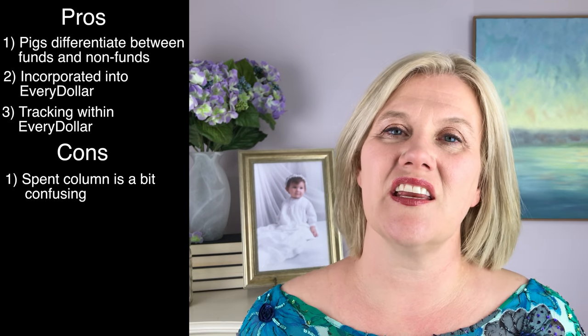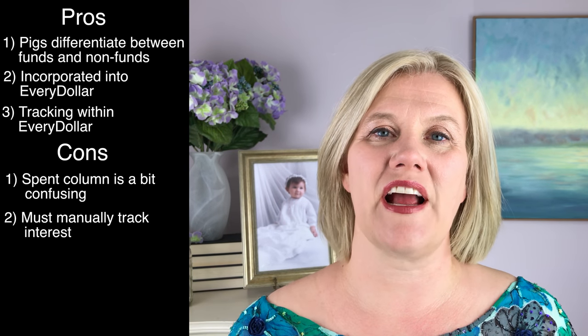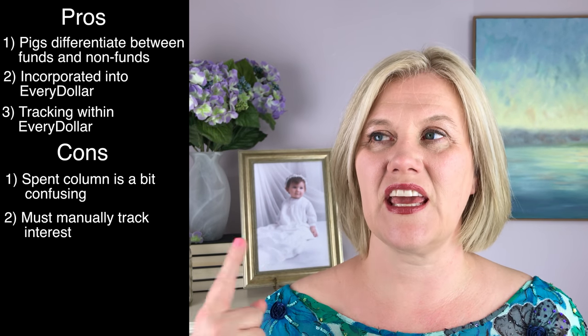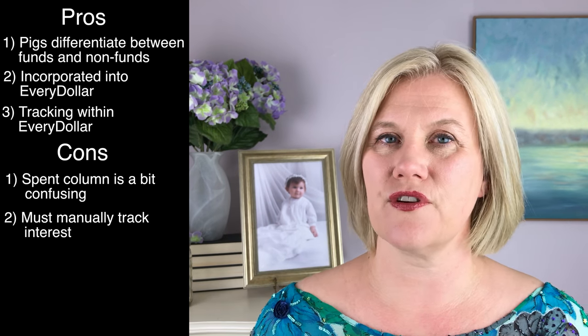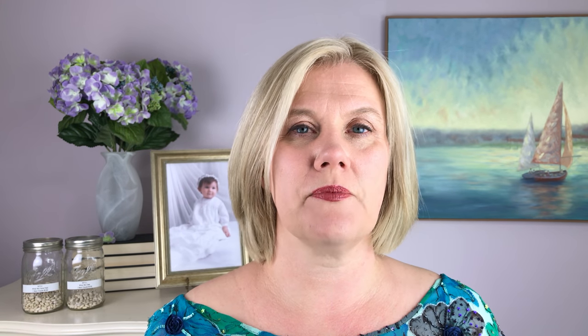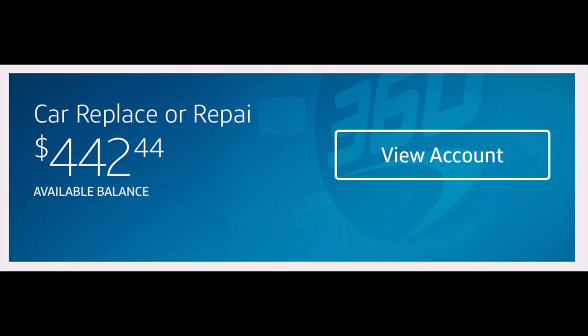Probably my biggest con is that there's no way for it to track interest, and I haven't been able to hook it up to the account so that the balance transfers over — that would be awesome. I have to hand-enter the interest when I get it, so my numbers don't really match up because you can only update it in the month you're in, not ahead or behind. For example, in my car repair/replace fund we have $442.44 actually in the account, but EveryDollar says we have $442.16. Not a big deal — it's a few cents — but for a type-A personality who wants everything correct, it's kind of a pain.